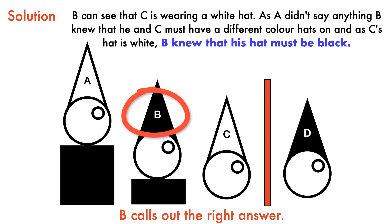And as C's hat is white, B knew that his hat must be black. Through this logical approach, prisoner B was able to answer the right hat color and all four prisoners will be freed.